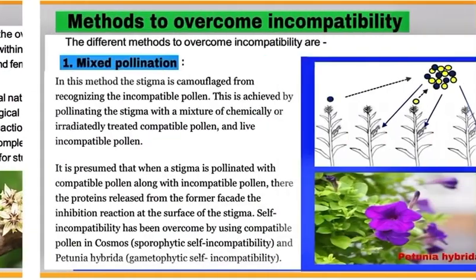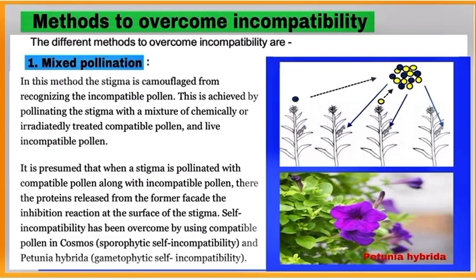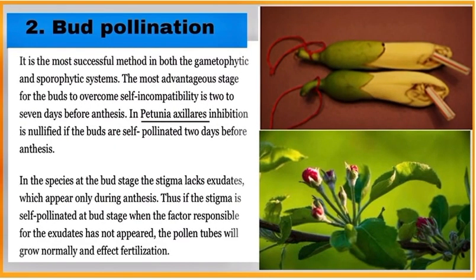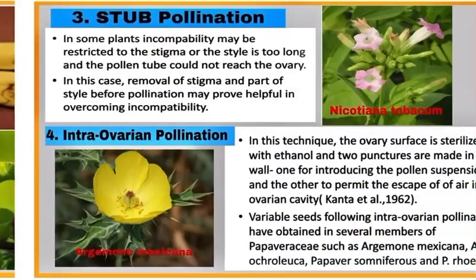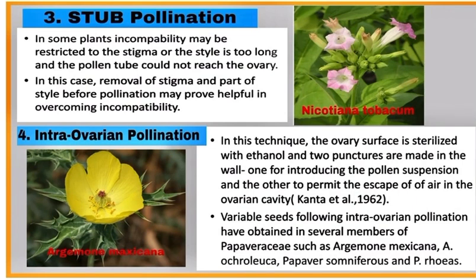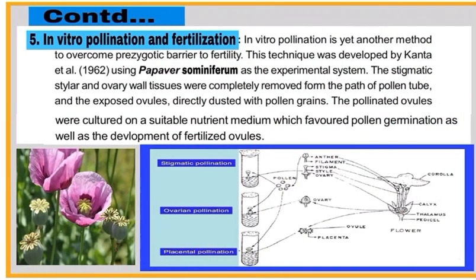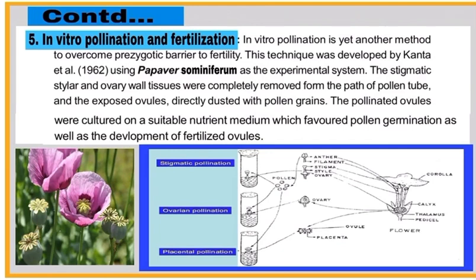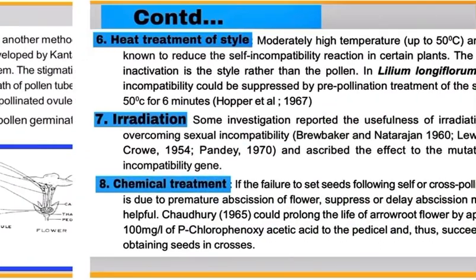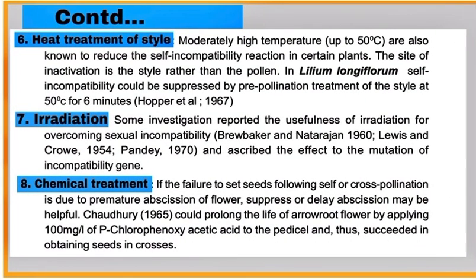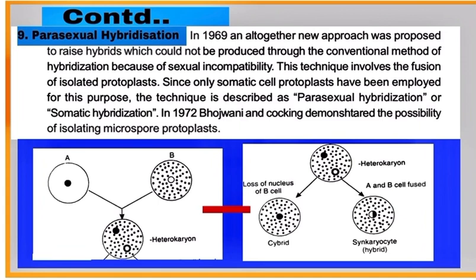Now write about methods to overcome incompatibility, like: Number 1, mixed pollination; bud pollination; stub pollination and intra-ovarian pollination; in vitro pollination and fertilization; heat treatment of style; irradiation; chemical treatment; and the parasexual hybridization approach.